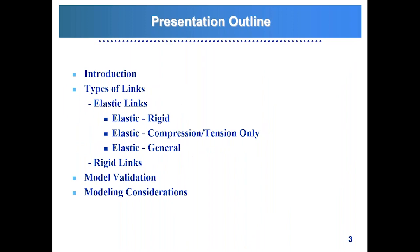As far as the presentation, I'll start with a brief introduction of links — why we need them and where they are used. Then I'll discuss the different types of links, touching on elastic links versus rigid links. I'll cover the different types of elastic links and their applications, then talk about model validation, which is in my opinion one of the most important parts. I'll present validation examples and workarounds for typical issues, and finalize with modeling considerations and tips for links in Midas.